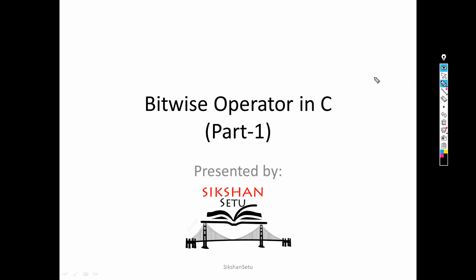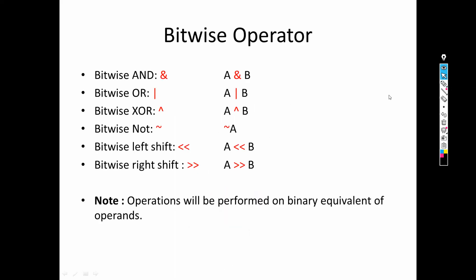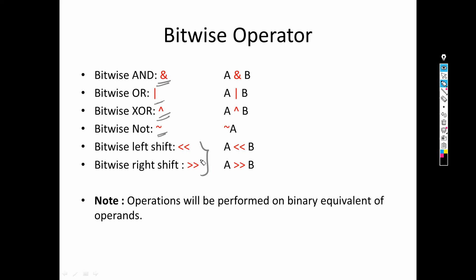First of all, what are the different bitwise operators that exist in C? We have bitwise AND, bitwise OR, bitwise XOR, bitwise NOT, and two bitwise SHIFT operators.